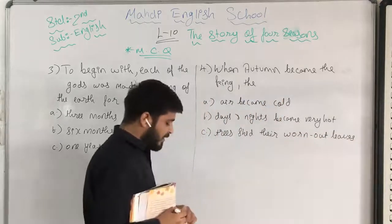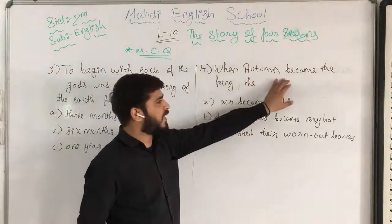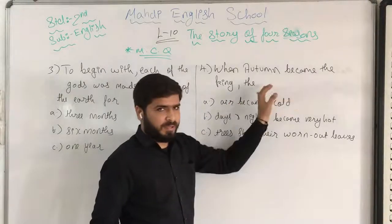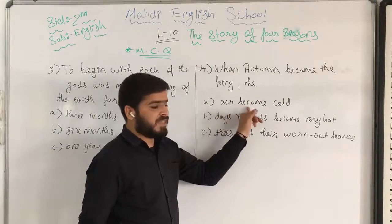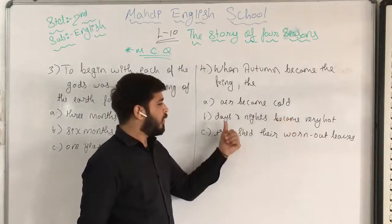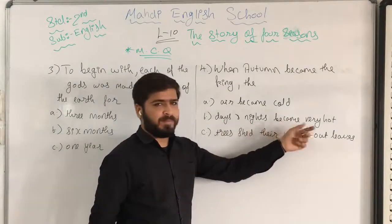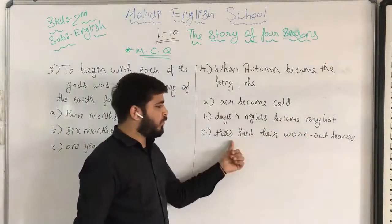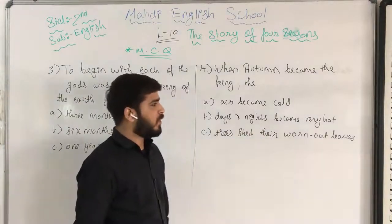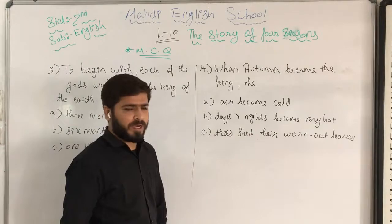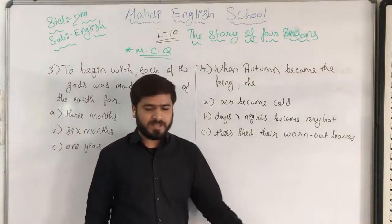I have written question number 4: when autumn became the king, the options are — air became cold, days and nights became very hot, or trees shed their worn out leaves. Please start writing those questions. I hope that you have already finished question number 3.